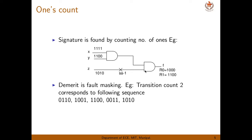A demerit of ONES count is fault masking. The transition count — meaning the ones count — may still come out correct even though the output is wrong. For example, if the fault-free count is one but the faulty output is 0 1 0 0, the ones count is still one, so the fault is masked. Similarly, if the fault-free count is two, multiple faulty sequences can have the same count, masking the fault.